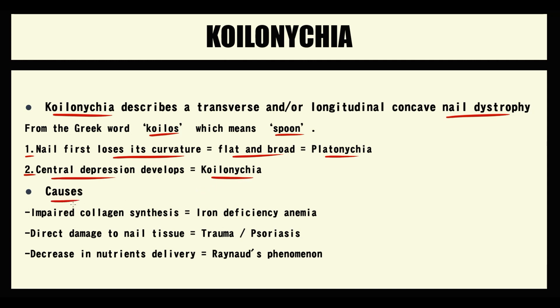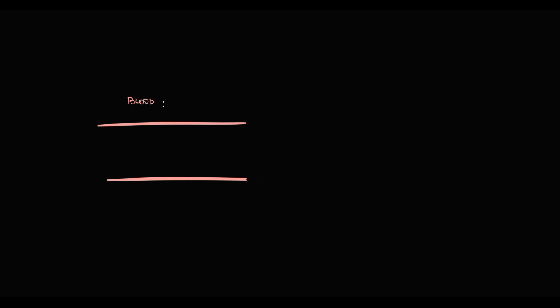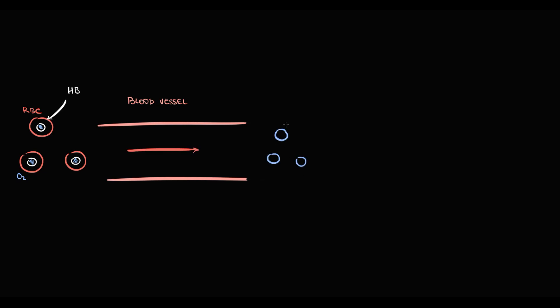By far the most common cause of koilonychia is iron deficiency anemia. To explain the pathogenesis of koilonychia, here we have a blood vessel. In the blood vessel we have red blood cells. Red blood cells have hemoglobin inside them. Hemoglobin carries oxygen, and its function is to carry oxygen through the blood vessels to tissues — in this case, the nail tissue.